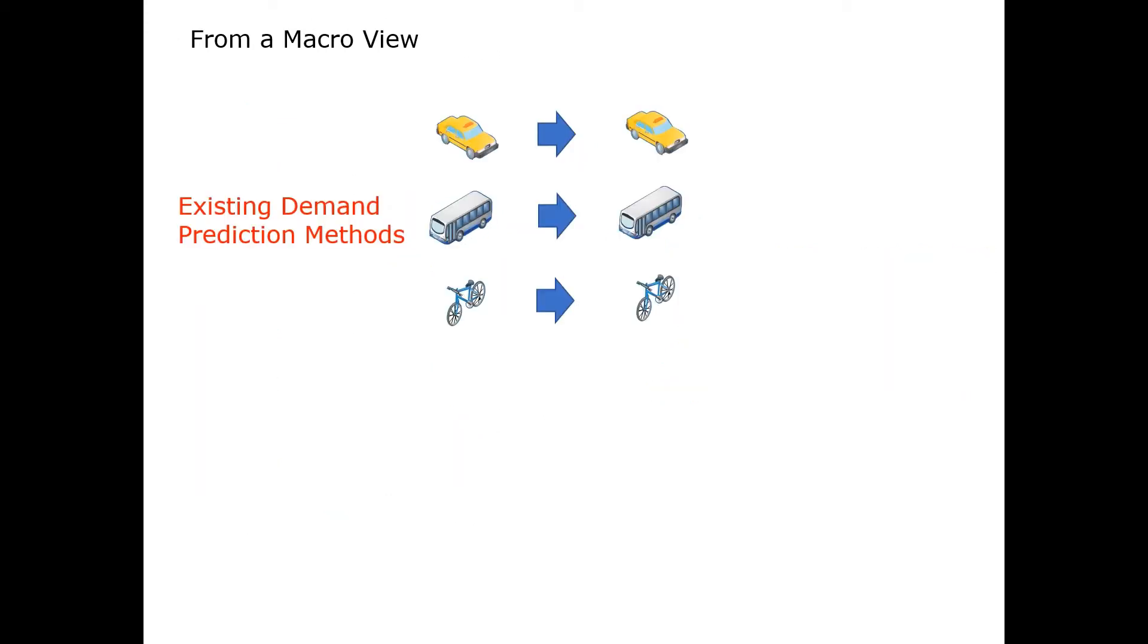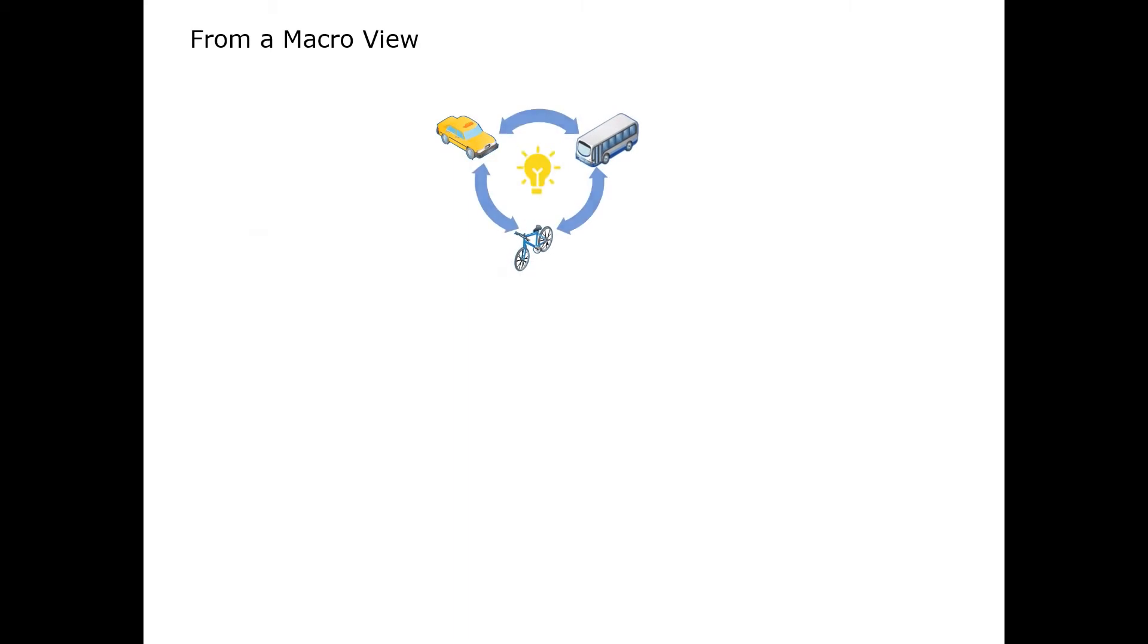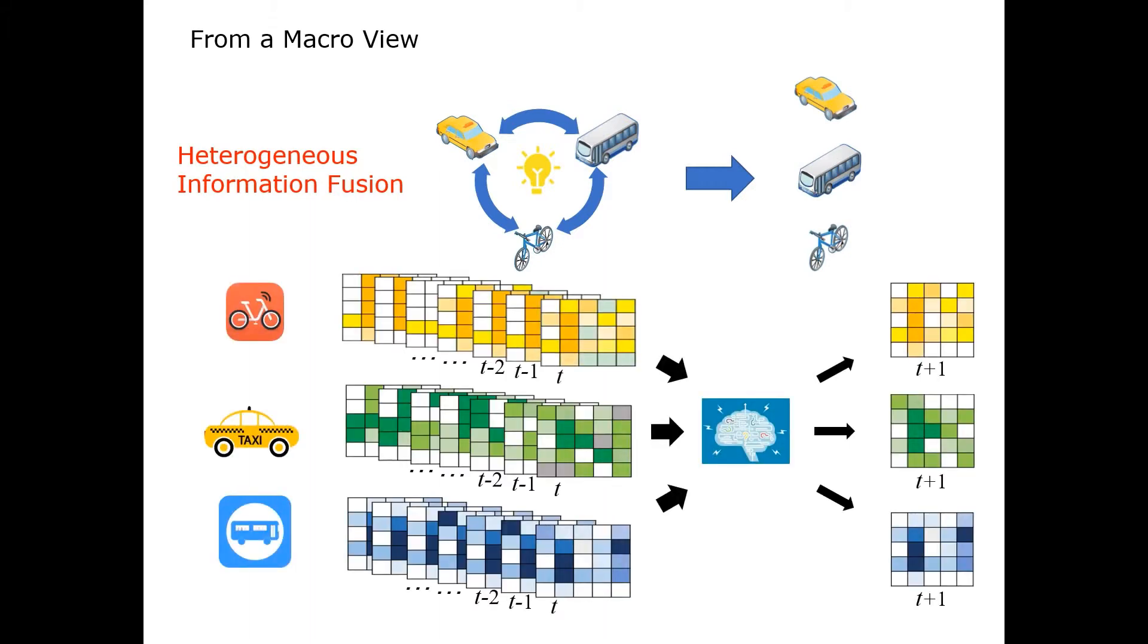For a micro view, the existing method predicts the demand of different transport separately. In fact, they are strongly related to each other. We employ different transport demand as inputs on the fields of heterogeneous information to make a co-prediction.